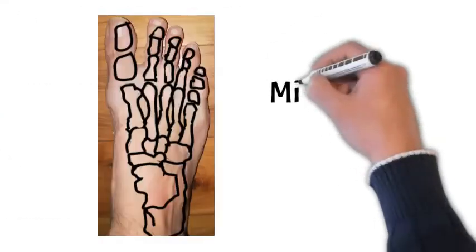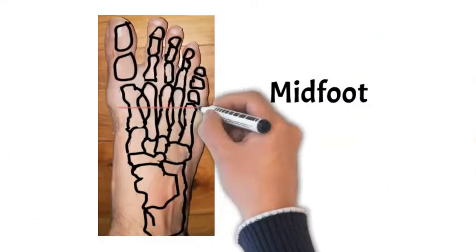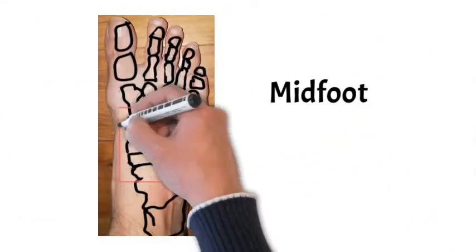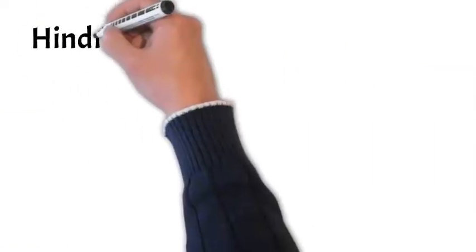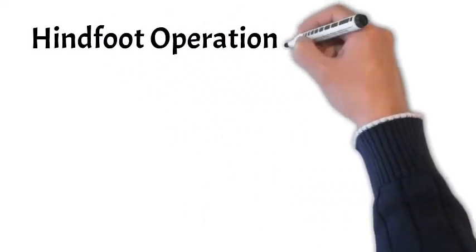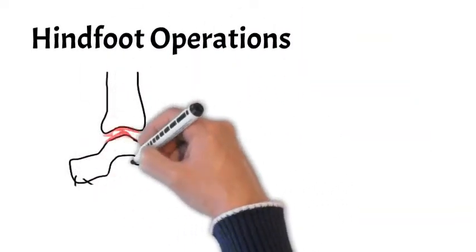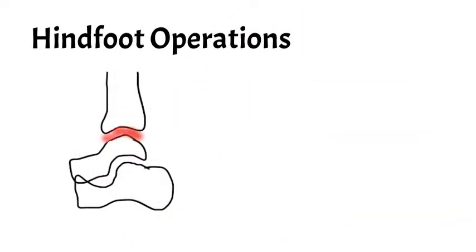The other type of operations included are midfoot operations — operations around the middle of the foot, marked in the red square. Operations on the toes were not included in this study, so they shouldn't be considered when thinking about hindfoot or midfoot operations.